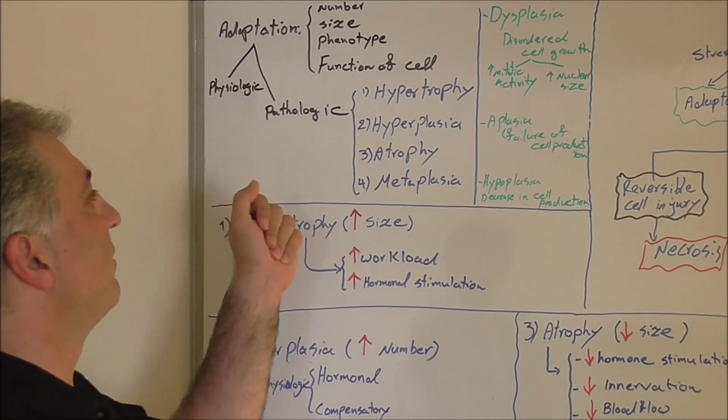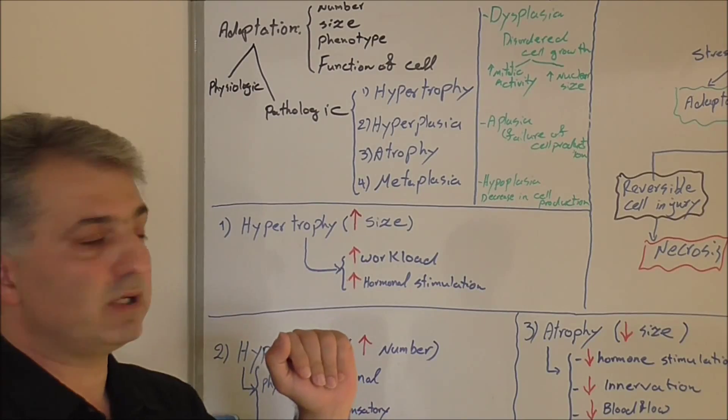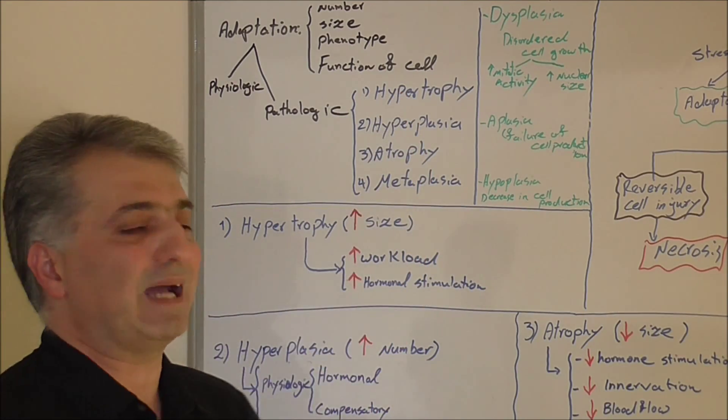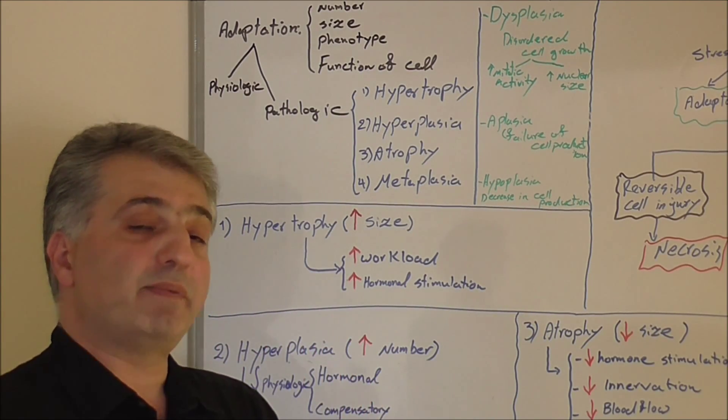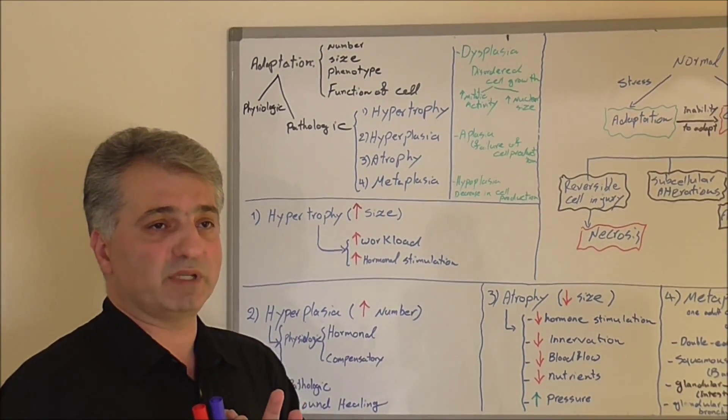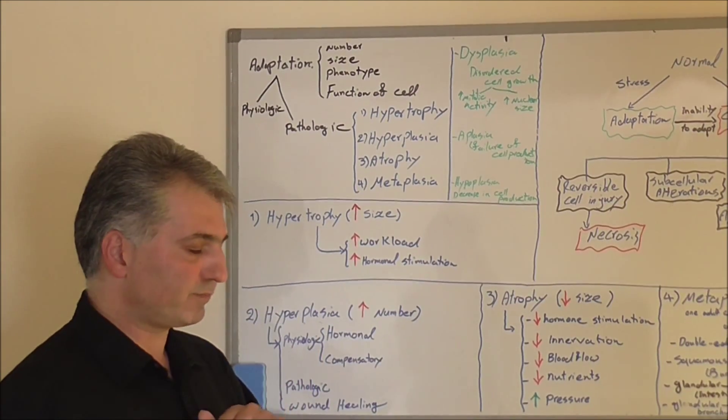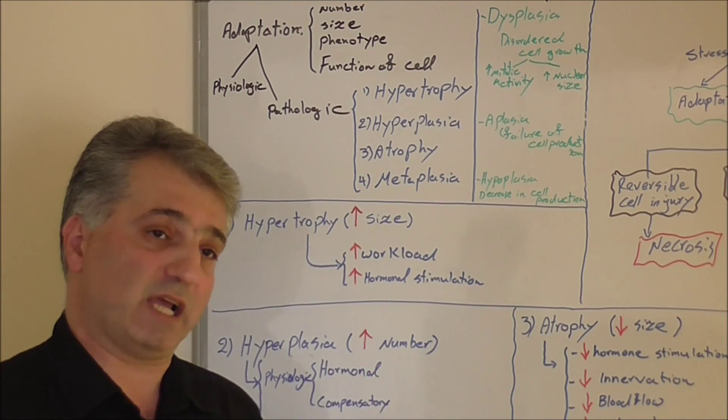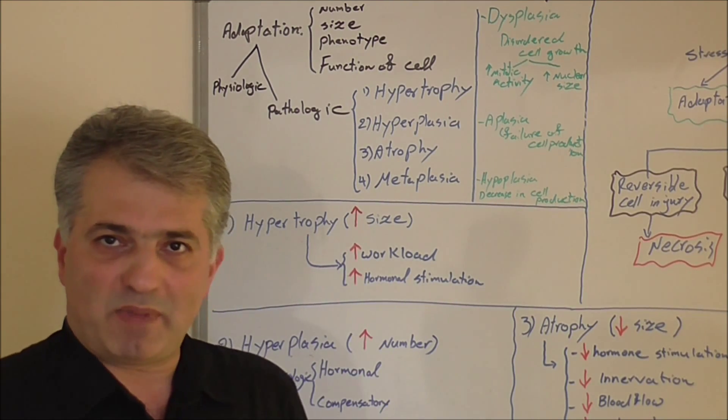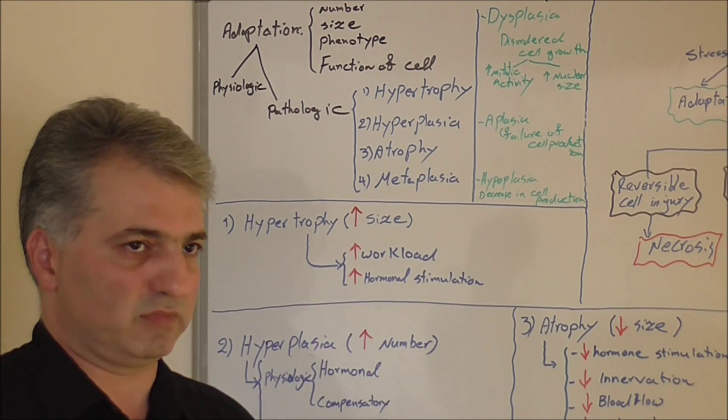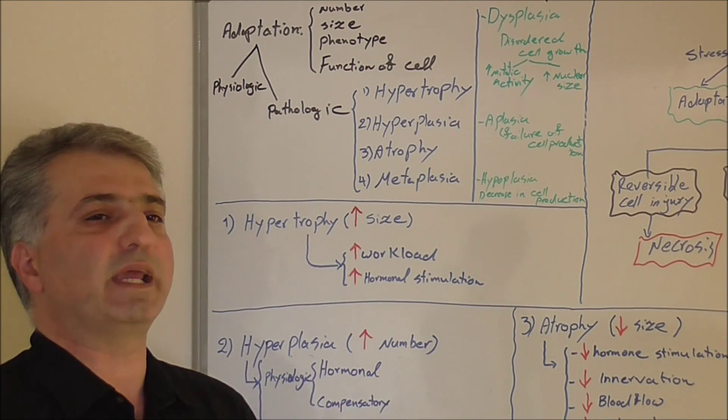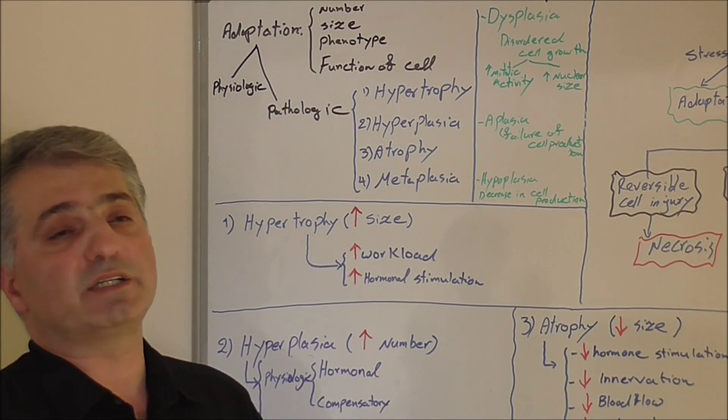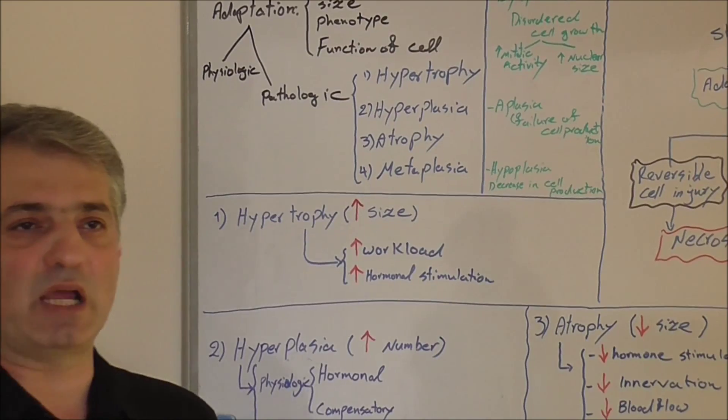We have terms to describe these changes: hypertrophy, hyperplasia, atrophy, and metaplasia. First, hypertrophy. Hypertrophy means the size is increasing, not the number of cells. For instance, skeletal muscle after birth, the number of cells is not increasing. It's not going to be replicated. We will have the same amount of muscle fibers. However, the size of those cells can increase, as in exercise, bodybuilding, and athletes. The bulk of muscle increases because the size increases.